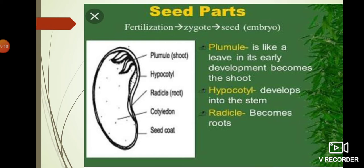Till now we saw about fruits. Now we are going to see about seed parts. Look at the seed - maybe a bean seed. The outer layer of the seed is called the seed coat. It is a dicot seed. If you divide it, you can divide it into two equal halves. That equal half is called a cotyledon, which can store food. The seed coat is the outer layer and it protects the seed.